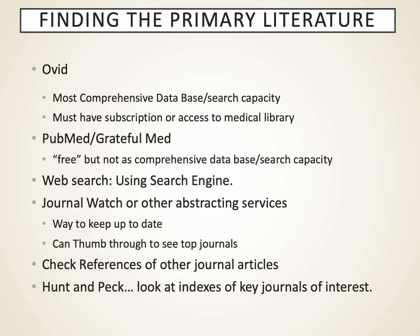When looking for an original article, one of the most common ways now is a Google or Bing search, but the question is whether you're getting to the original data and whether you have access to it. Working with a medical librarian familiar with online resources can be very helpful. Ovid is probably the most comprehensive database used for a generation or so. PubMed is also a way to access data. There are also journal abstracting services like Journal Watch from the New England Journal, which abstract the top journals in your area of interest.